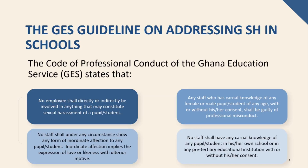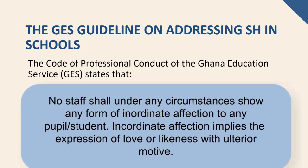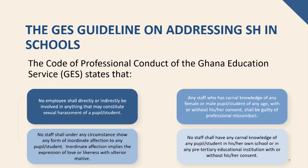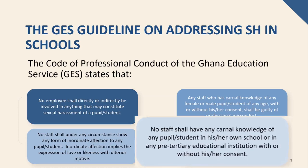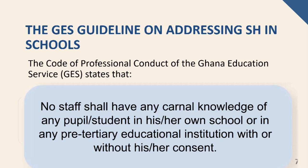Thirdly, no staff shall under any circumstance show any form of inordinate affection to any pupil or student. Inordinate affection implies the expression of love or likeness with ulterior motive. Fourthly, no staff shall have any carnal knowledge of any pupil or student in his or her own school or in any pre-tertiary educational institution with or without his or her consent.